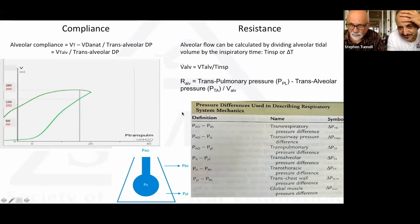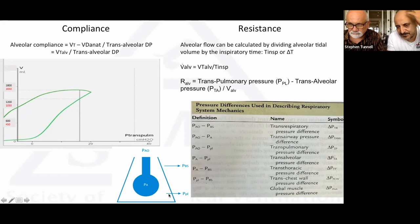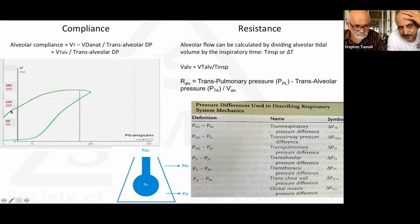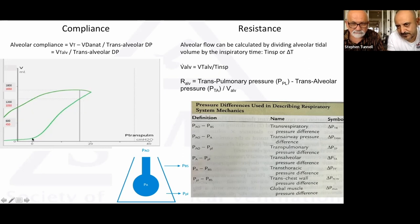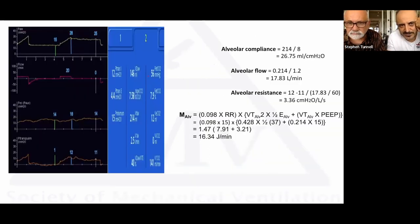A regular volume-pressure curve of the lung itself uses transpulmonary pressure versus volume (shown in black). When we subtract the anatomical dead space from total tidal volume we obtain the alveolar tidal volume. Since we're using the same transpulmonary pressure but a different tidal volume, we can calculate the alveolar compliance from the same volume-pressure curve.